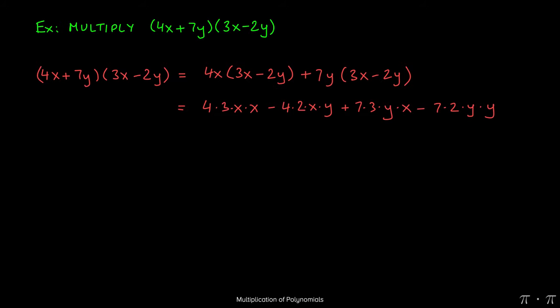At this stage we can multiply the constant coefficients together and also use the product rule. 4 times 3 will give us a 12, x times x using the product rule of exponents gives x squared. Negative 4 times 2 yields 8, x times y just comes along as it is. 7 times 3 gives us 21, and then y times x is just yx. And lastly, 7 times 2 gives us a 14 with a minus coming along for the ride, and then y times y yields y squared.